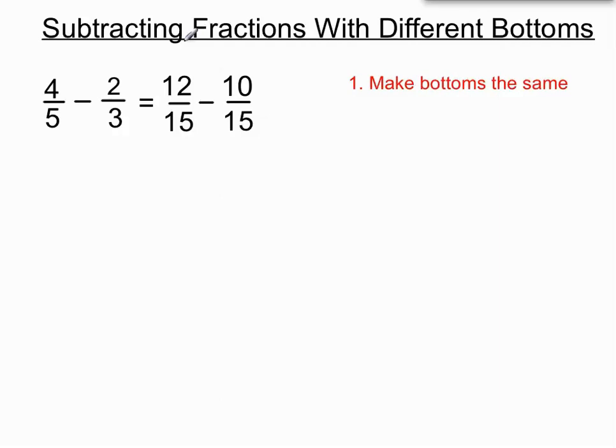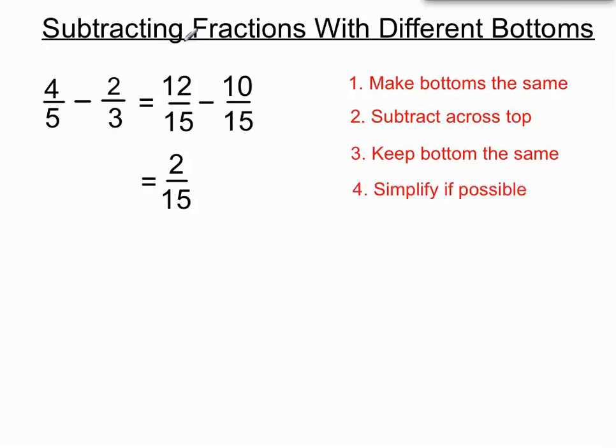It makes it like the previous examples we just had a look at. We subtract it across the top. So 12 minus 10 is 2 for the top. And we keep the bottoms the same. So it's still 2 over 15. We also should see if we can simplify it all. But I don't think we can, so we'll leave it at that. Let's have a look at one more example.